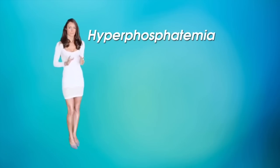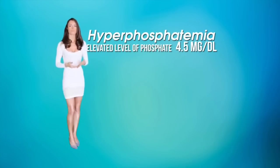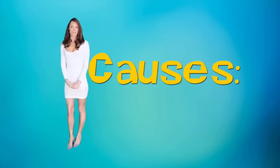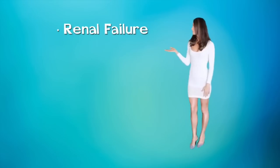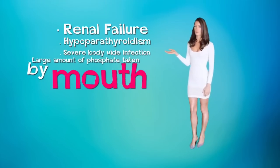Hyperphosphatemia. Hyperphosphatemia is when the phosphate level is elevated above 4.5 milligrams per deciliter. Causes. Causes can include renal failure, hypoparathyroidism, severe body-wide infection, large amounts of phosphate taken by mouth.